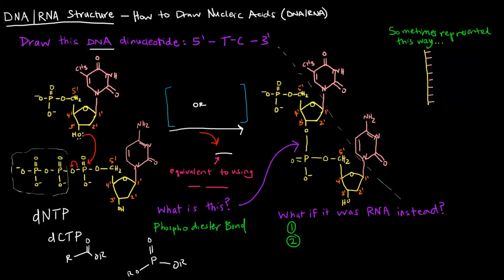And specifically, it's a 3' to 5' phosphodiester bond because the 3' OH of the previous nucleotide, the deoxynucleotide in this case, is bound to the 5' phosphate of the next one.